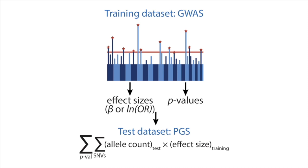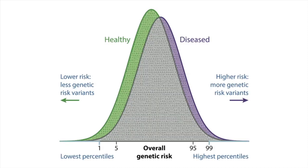A PRS by itself for a single person is just an arbitrary number that cannot be interpreted well. In order to be able to interpret the PRS you need a large group of people that share the same ancestry and possibly even the same socio-demographic background — among each other and with the people used for the training GWAS. Only with this group are you able to interpret the PRS of an individual relative to that group.